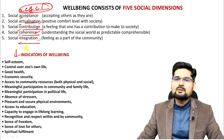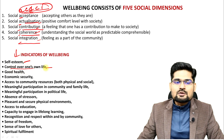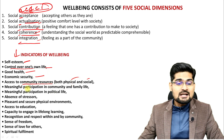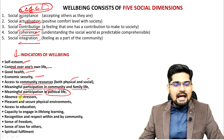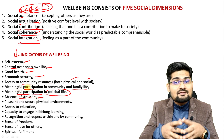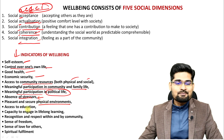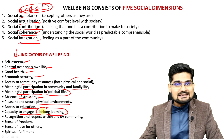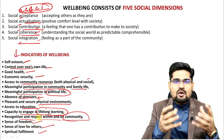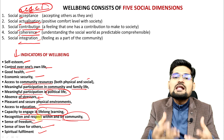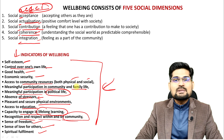The indicators of well-being in a society include: self-esteem of people, control over one's own life, good health, economic security, access to community resources (both physical and social), meaningful participation in political, community, and family life, absence of stressors (social, economic, political), pleasant and secure physical environments, access to education, capacity for lifelong learning, recognition and respect within community, and spiritual fulfillment. These are the basic indicators of social well-being.